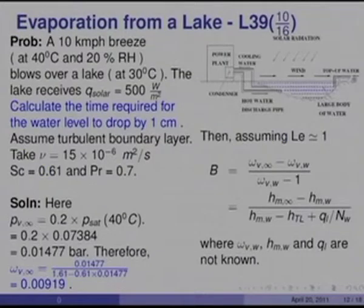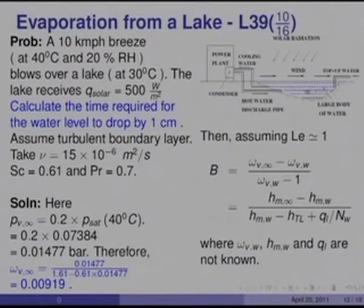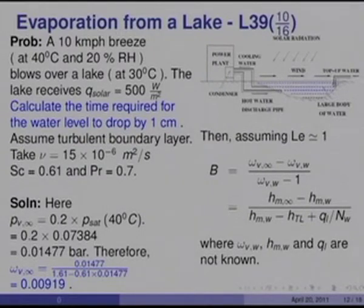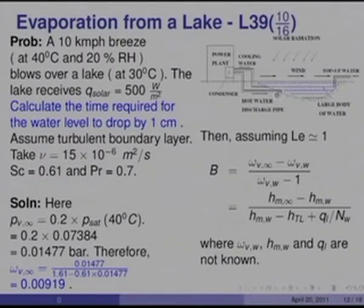This represents a typical scenario — say a power plant drawing cooling water from a lake and returning hot water, causing the lake level to drop, requiring topping up from a nearby source. Assume a turbulent boundary layer throughout. Given: kinematic viscosity = 15 × 10⁻⁶ m²/s, Schmidt number = 0.67, Prandtl number = 0.7.